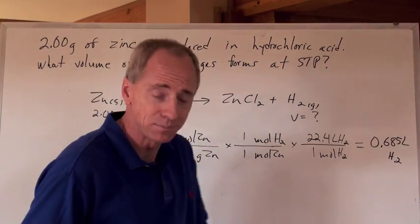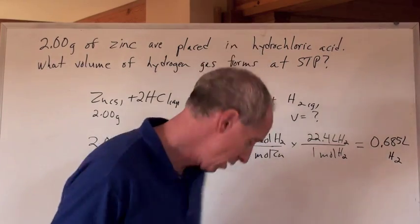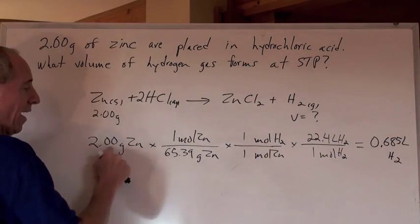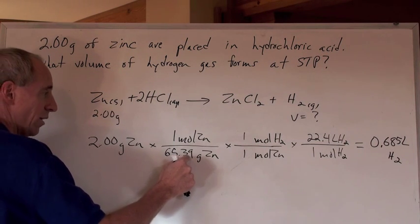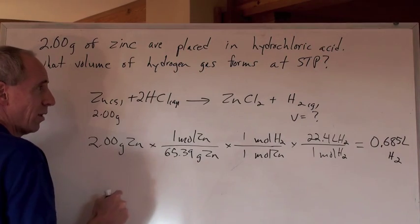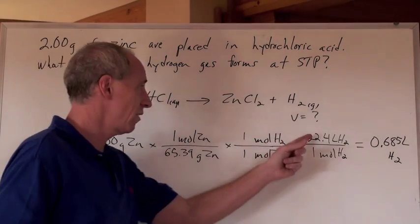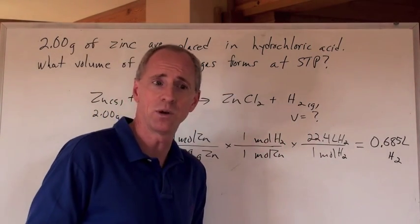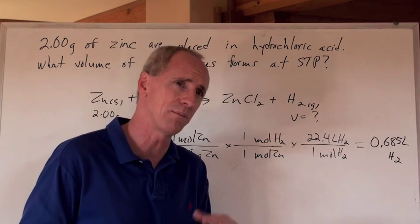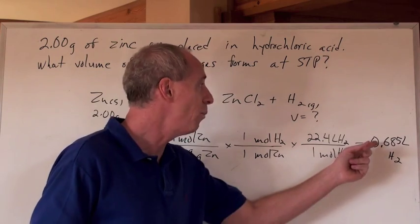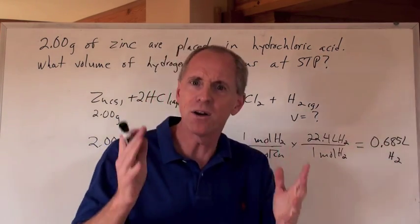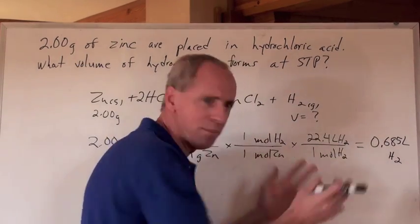Does that actually make sense? Two grams of zinc at 65.39 g/mol is about 3% of one mole. So what's 3% of 22.4 liters? Ten percent is 2 liters, so 3% is about a third of 2 liters — around 0.6 to 0.7. And 0.685 — yeah, it works out. It's got to be logical. Just think it through.